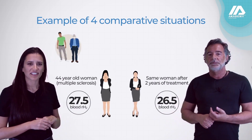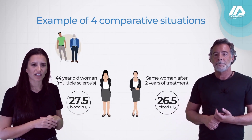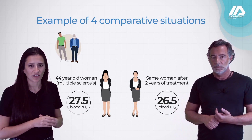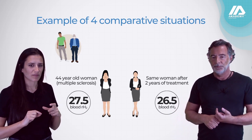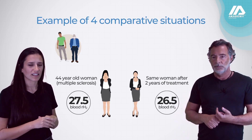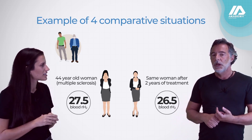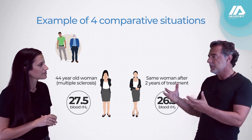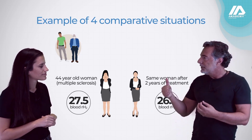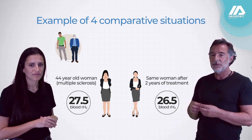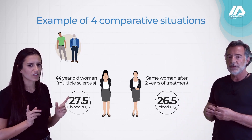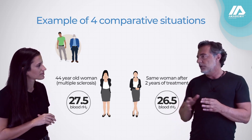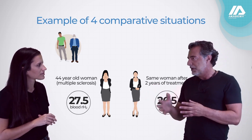Here we have a woman with multiple sclerosis. Her value is a little bit higher than the ideal. After two years of treatment — which was amazing because it reduced a lot of symptoms — look: the difference was only one value. Let me tell you one thing that is very important.